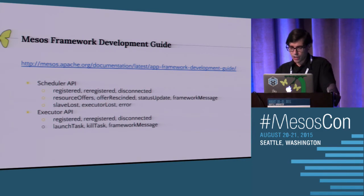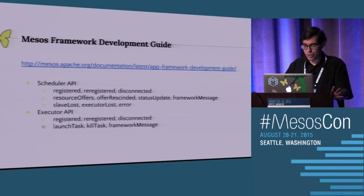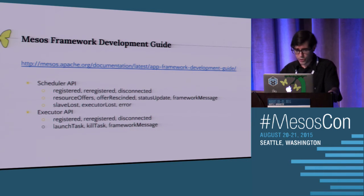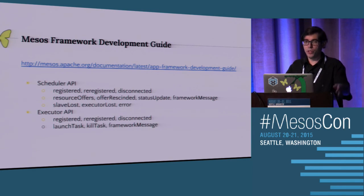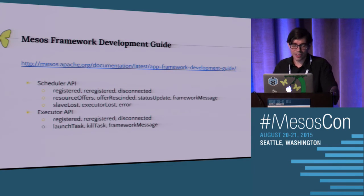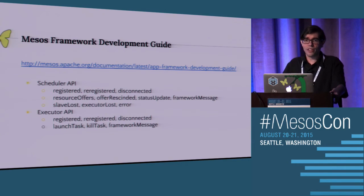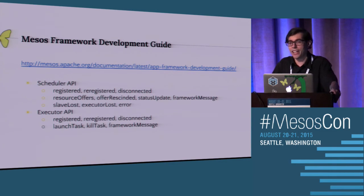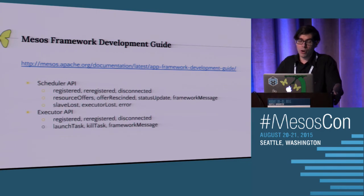There's a pretty good development guide - definitely check out the documentation. The scheduler API has a few different parts. There's registered, re-registered, and disconnected - these are all callbacks. When the scheduler starts and the master registers the framework, you get a notification callback. If you disconnect and reconnect, you get a re-registration callback. Then there's resource offers - these are the offers Mesos sends to you. Every time it sends a resource offer, your callback function gets called and you implement your business logic to decide whether to accept or decline the offer. There's also offer rescinded - Mesos can send back saying an offer has been rescinded.